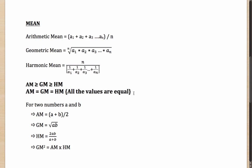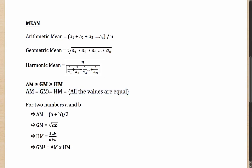For example, if all values are 5: the arithmetic mean is (5+5+...+5) × n / n = 5. The geometric mean is the nth root of 5^n = 5. The harmonic mean is N divided by (N/5) = 5. As a matter of fact, if any two of them are equal — say arithmetic mean equals geometric mean — that means the harmonic mean is also equal to that same value, because all values are equal.